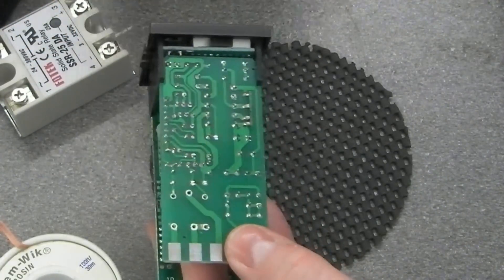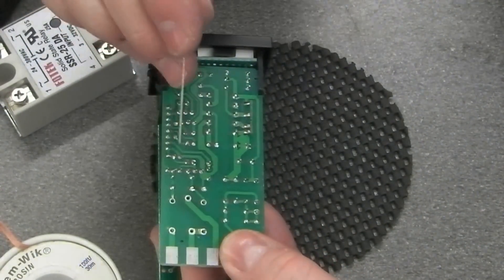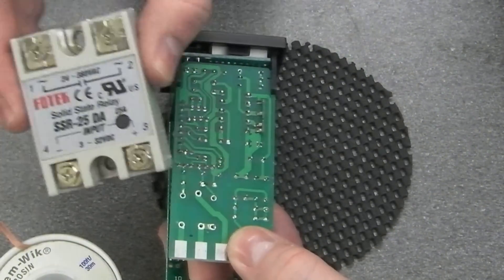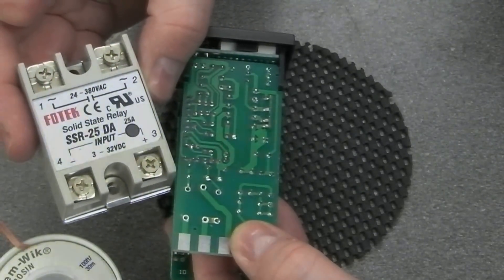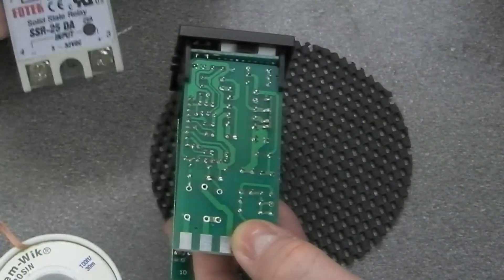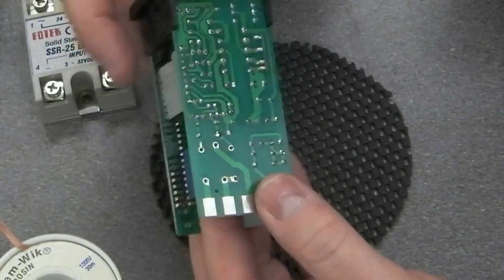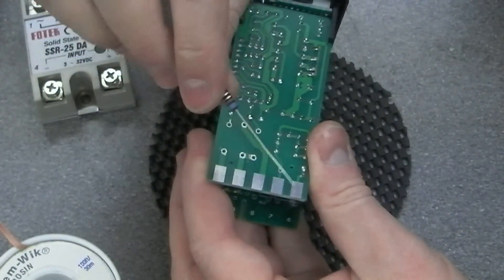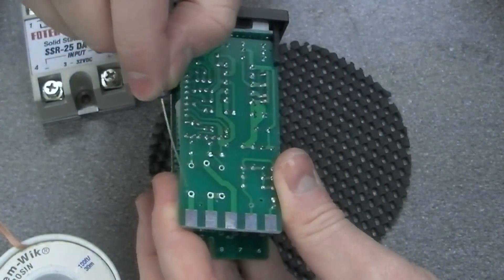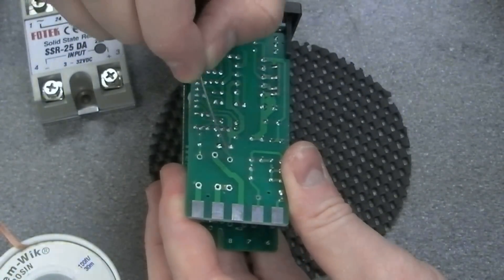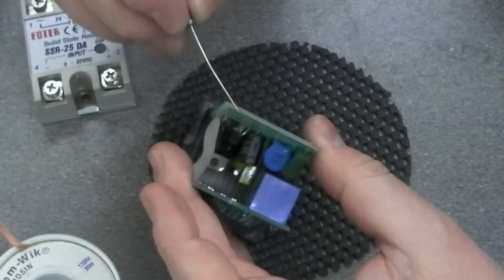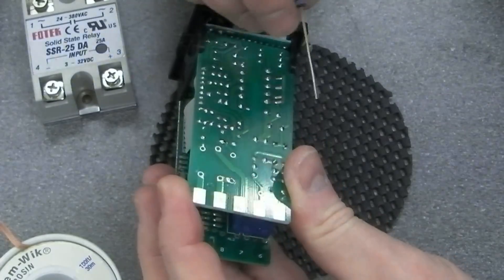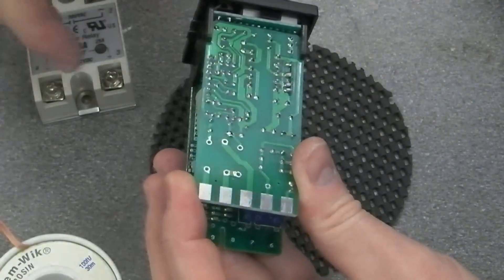So what I want to do is use this switching 12 volts to actually connect to the solid state relay which requires 3 to 32 volts DC. So all I've done is unsoldered the relay and we're going to take that out. All I'm going to do then is with a bit of resistor lead I'm just going to bridge across here and across here and that will convert pins 4 and 5 to 12 volt DC supply that we need for the solid state relay.